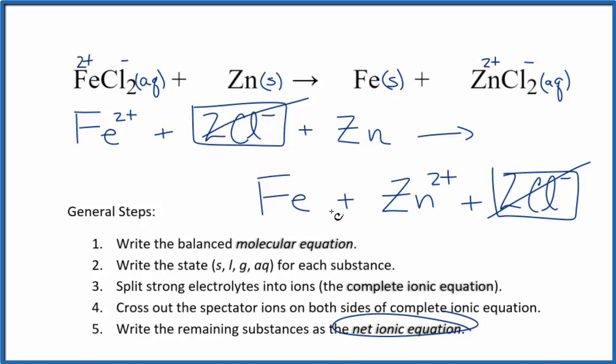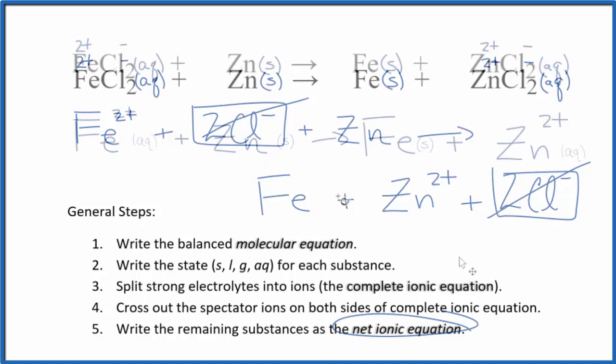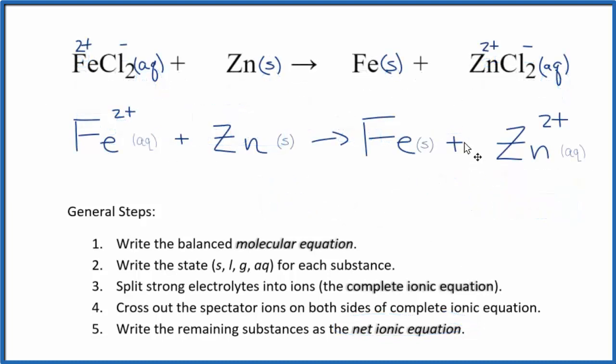I'll clean this up and write the states. So this is the balanced net ionic equation for iron 2 chloride plus zinc. We have our charge balanced. We have a 2+ here on the reactant side, and then on the products, there's a 2+ charge. So charge is balanced. If you count the atoms up, they're balanced as well.